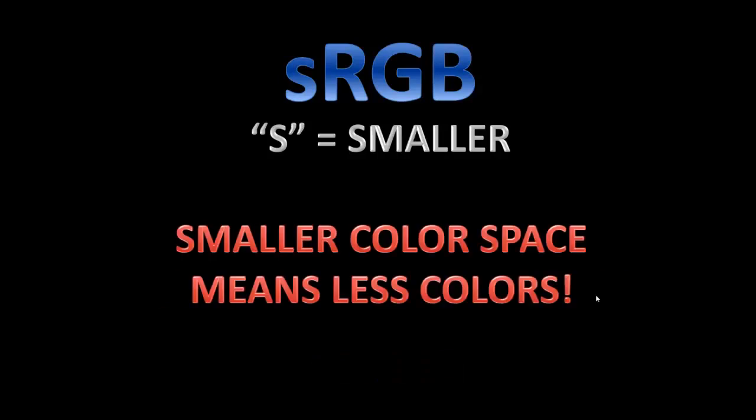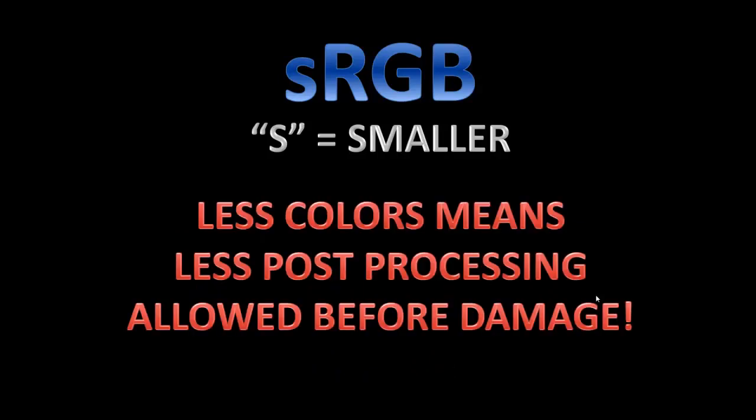Now here are the downsides. The biggest downside is definitely the smaller color space. A smaller color space means less color — minus one sRGB. The problem with less color means less post-processing is allowed before you damage the image. For example, if you are trying to fix skies that have huge gradients, sRGB might not be the color space for you because you don't have as many colors. Minus one sRGB.